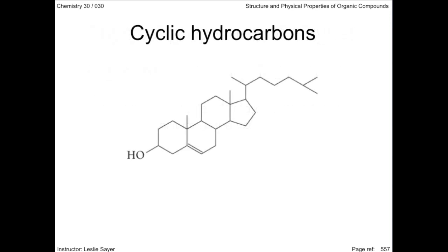Cyclic hydrocarbons: This line structural formula is cholesterol. Cholesterol is from a family of organic compounds called steroids, and steroids have four connected hydrocarbon rings. Cholesterol is insoluble in water and is carried around your body via the circulatory system inside small lipid protein bubbles called lipoproteins.